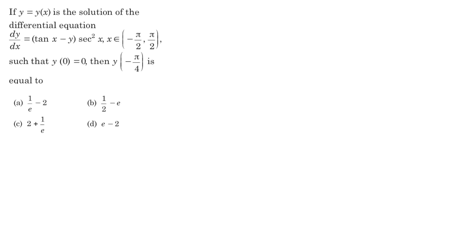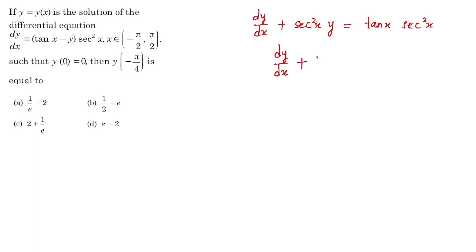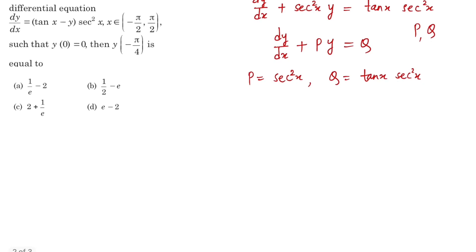If you look at this differential equation, we can rewrite it as dy/dx + sec²(x)·y = tan(x)·sec²(x). This is a first-order, first-degree linear differential equation. Comparing with the standard form dy/dx + P·y = Q, where P and Q are functions of x, we get P = sec²(x) and Q = tan(x)·sec²(x).